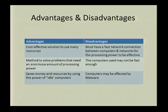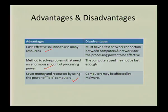What are the advantages and disadvantages of grid computing? It's a cost-effective solution — you don't have to go and buy computers, you can use computers that are not being used. It can solve problems that need an enormous amount of processing power and saves money by using the power of idle computers. The disadvantages are: you need a fast network between the computers to make it effective, those computers may not be fast enough, and the computers might be affected by malware — software that can harm your computer.